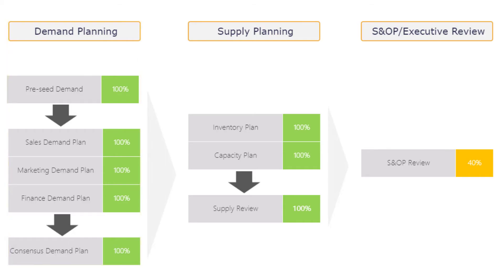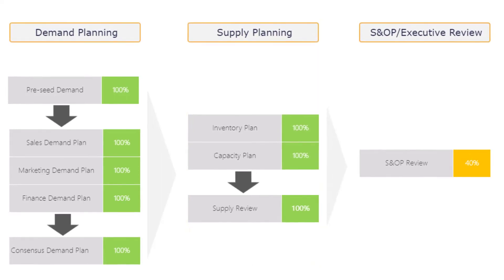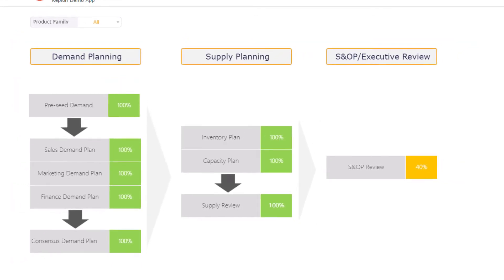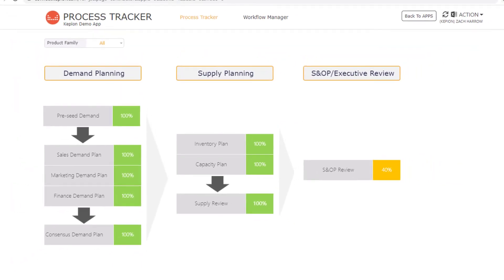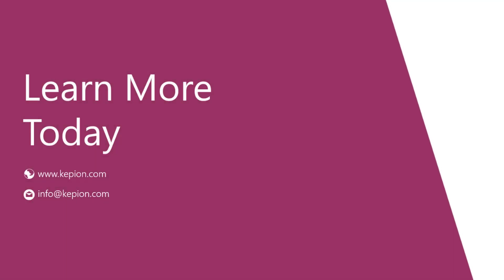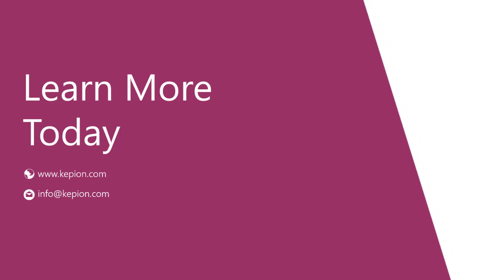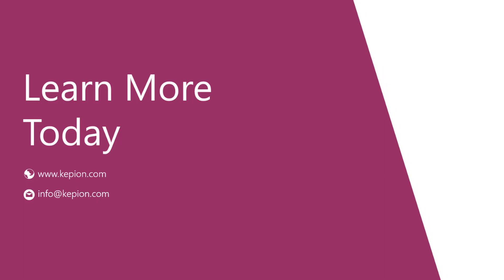Now that we are completed with the consensus review, we are ready for production to conduct their operational planning. This is just one of hundreds of examples on how Kepion can be modeled for a sales and operational planning process. Check out more examples of other apps on Kepion.com. Proceed to our supply plan video to see the next steps in our sales and operation planning process. Have a great day.